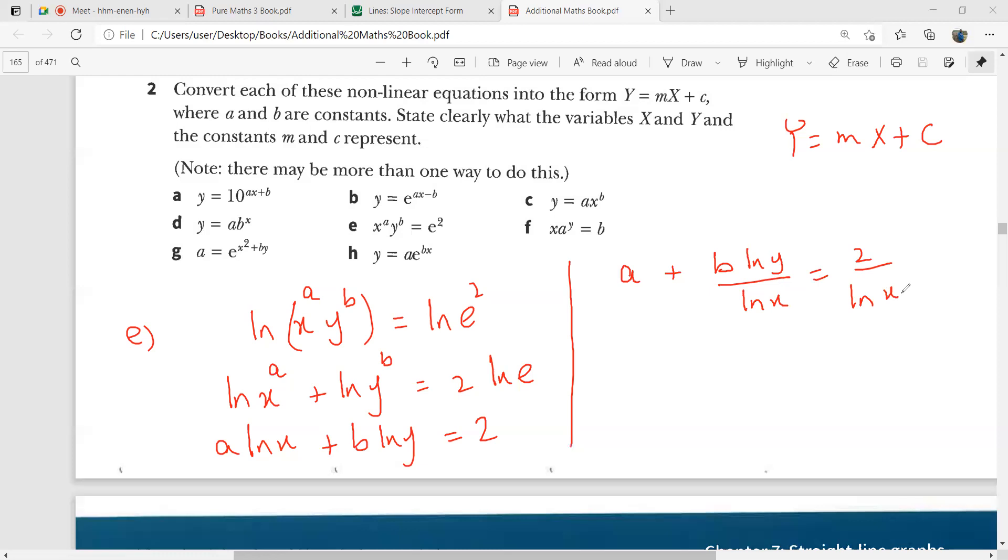And yes, just one minute. I can write it as a over 2 plus b over 2. Oh, this one is a very nasty one. This is 1 over ln x. So guys, this is finally the form that we were looking for. This is all constant, this is all variable, and this is constant times variable.